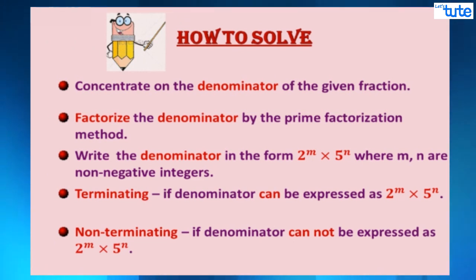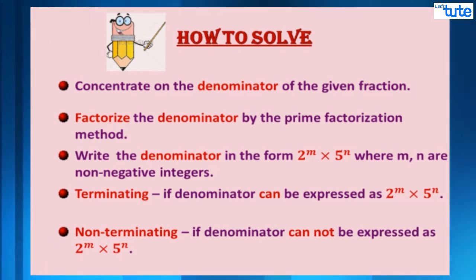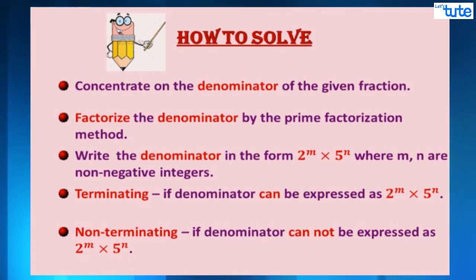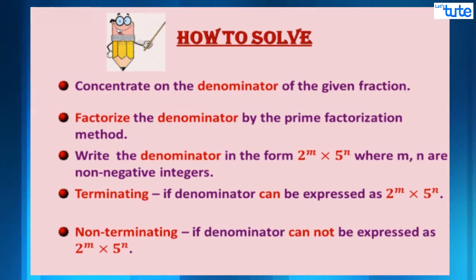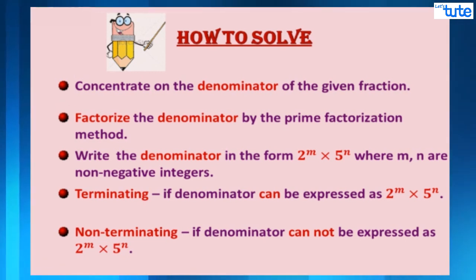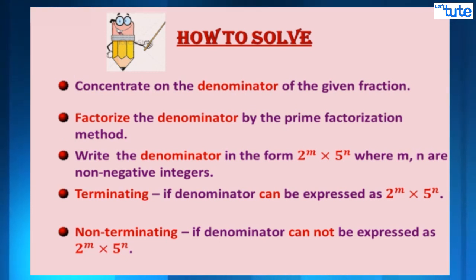So friends, for any given fraction p by q, you can now quickly check whether the fraction is terminating or non-terminating. For that, you just have to factorize the denominator and check whether you can write the denominator in the form 2 raised to m into 5 raised to n for some non-negative integers m and n.